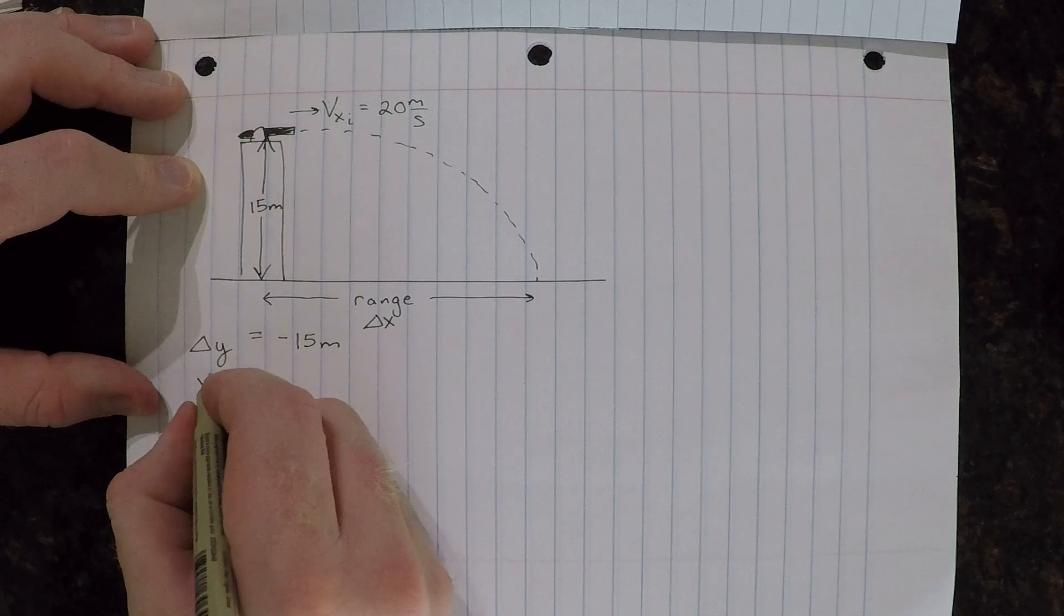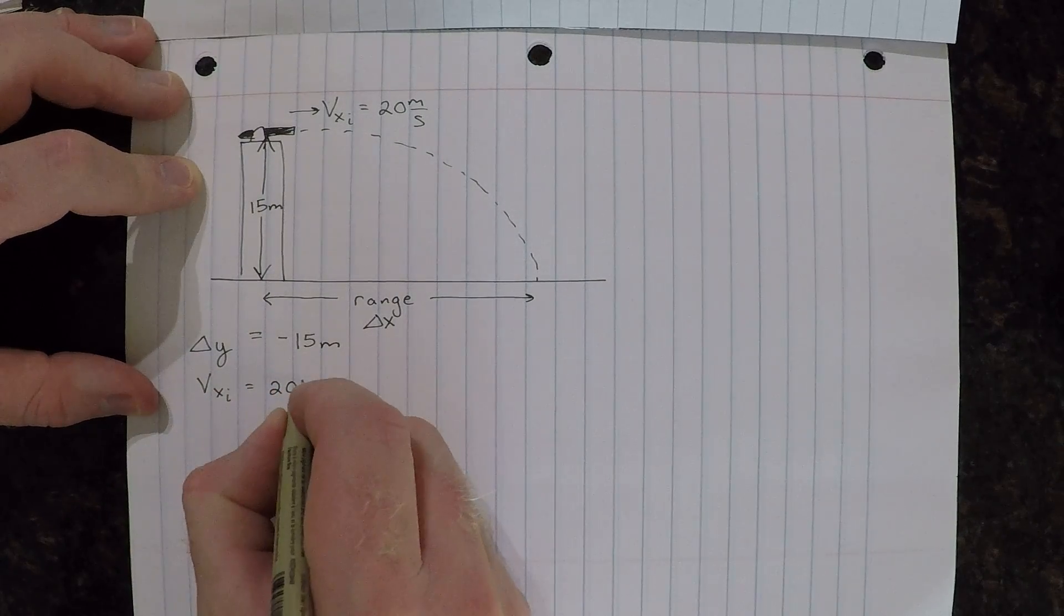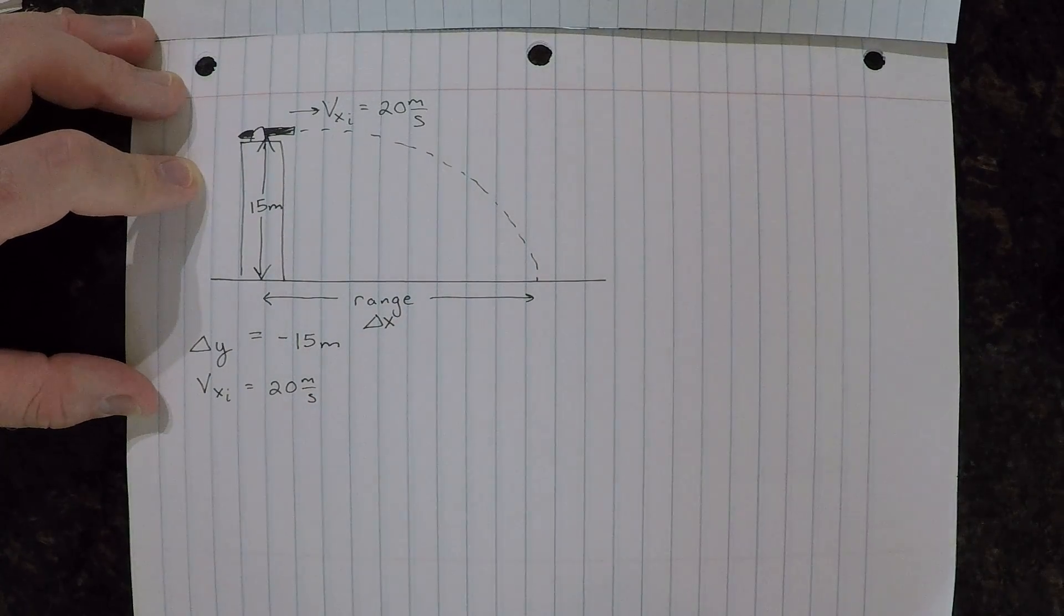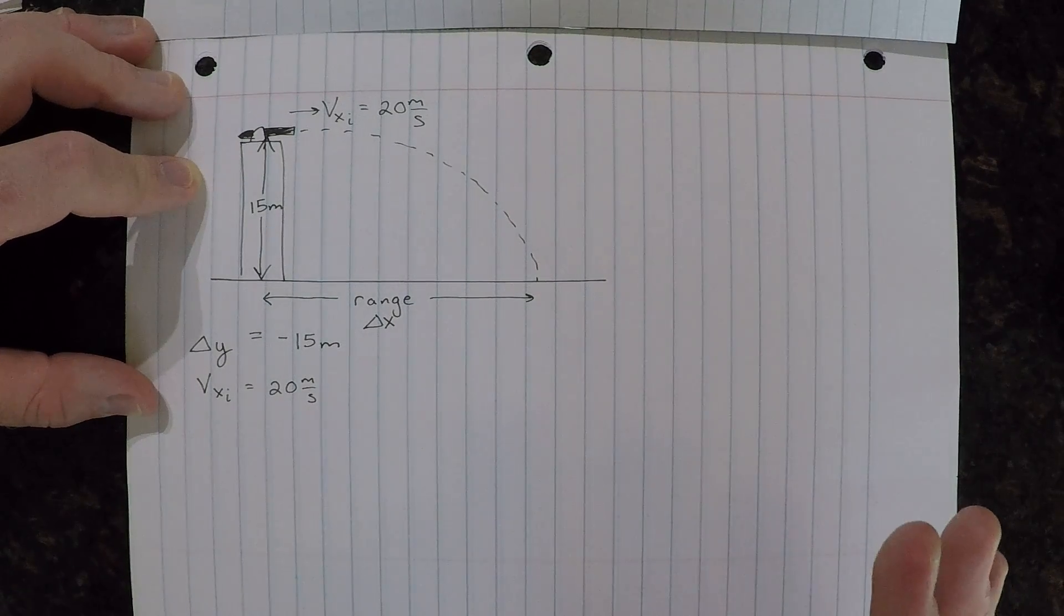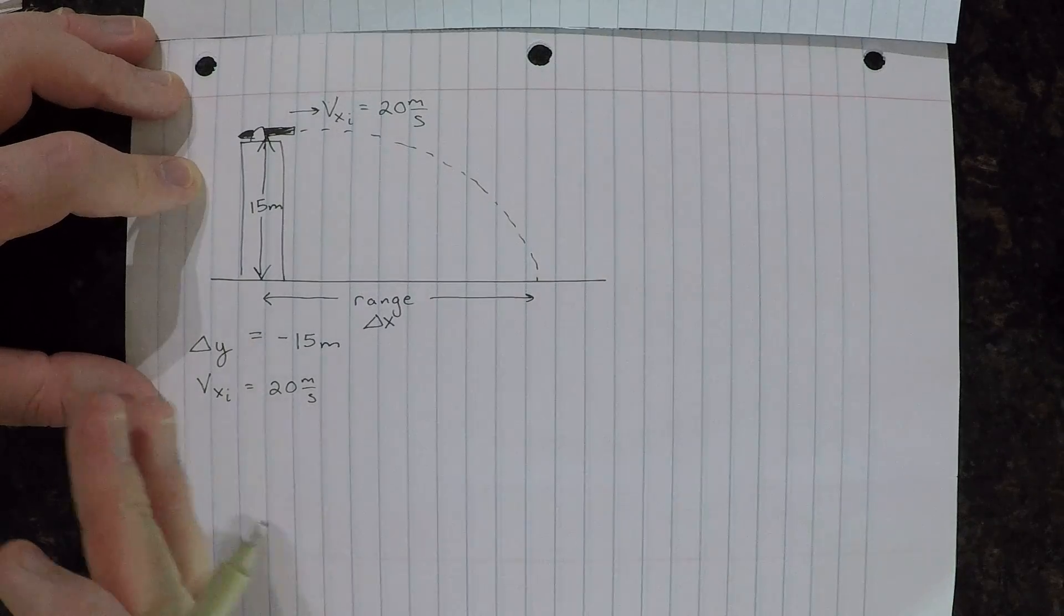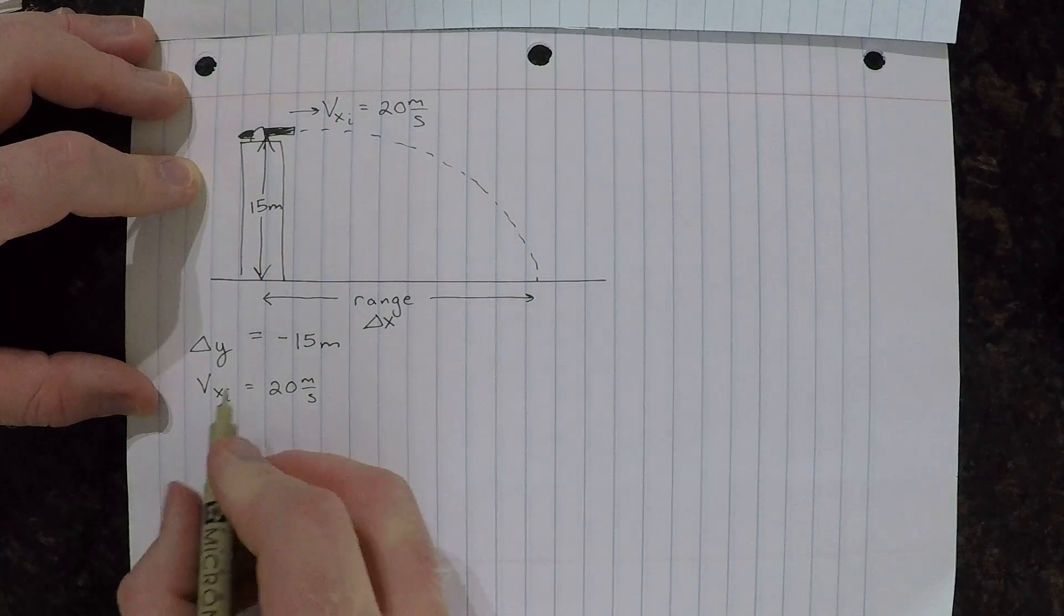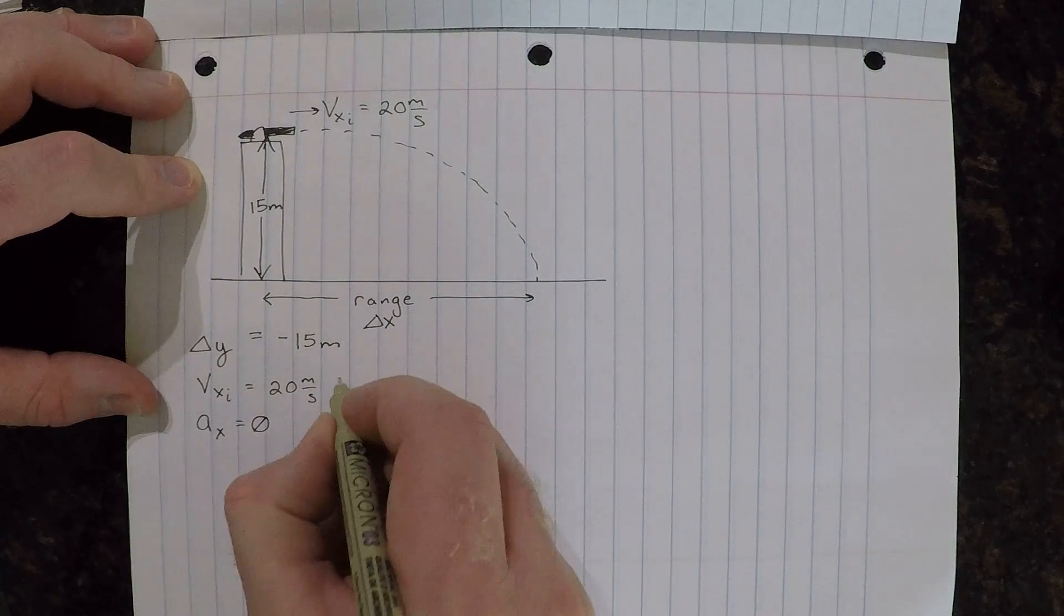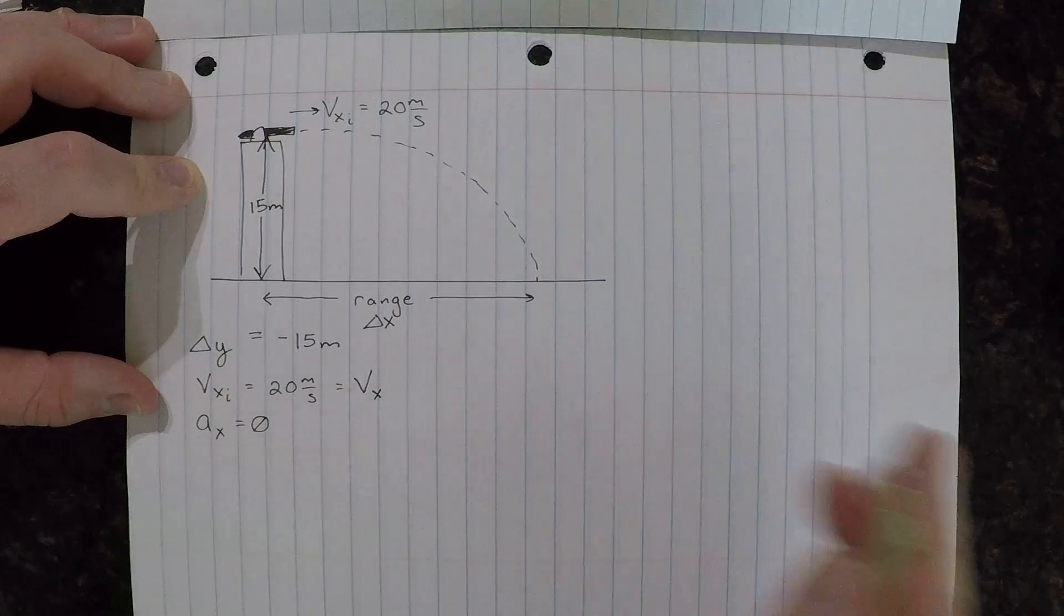We know that our initial horizontal velocity is equal to 20 meters per second, and because this is a projectile motion problem where we're going to ignore air resistance, the projectile will continue at that speed for its entire motion. We'll say that there's no acceleration in the horizontal direction, so this will be zero, which means this is just equal to the horizontal velocity the entire time.